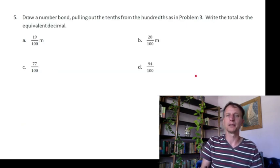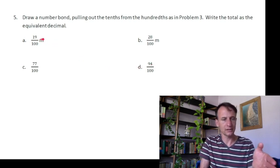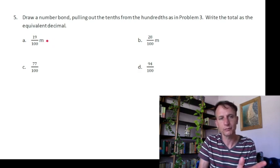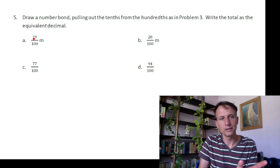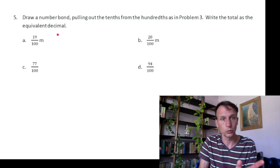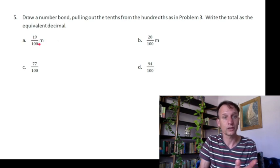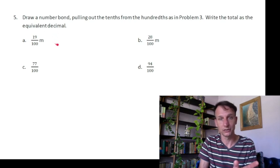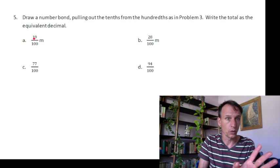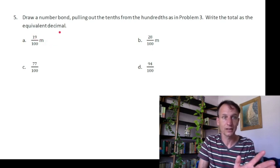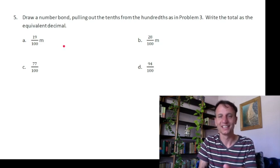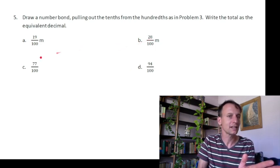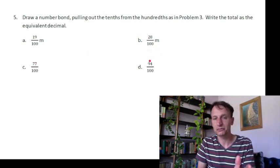At this one you're going to draw a number bond pulling out the tenths from the hundredths. You know what number bonds look like, but you're going to say how many tenths? Let's do one orally together here. Look at nineteen-hundredths. So look at the one here, that's one-tenth. We could call it ten-hundredths or one-tenth. So I would draw out a line, here's one-tenth, and that leaves nine-hundredths. So the number bond would be one-tenth, nine-hundredths. With that in mind, another way of thinking about it, in terms of money, one dime, nine pennies. Same thing here, two dimes and eight pennies, seven dimes and seven pennies, nine dimes and four pennies.